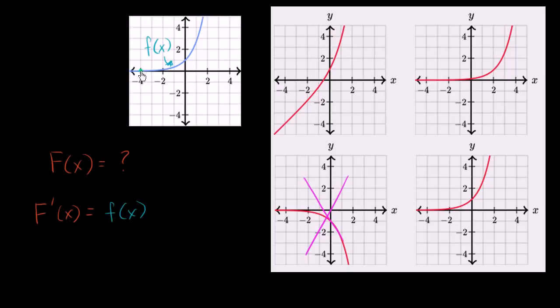f of negative four is pretty close to zero. It's pretty close to zero. It's slightly more than zero. So that tells us that the slope of the tangent line of capital F of x has to be pretty close to zero when x is equal to negative four.